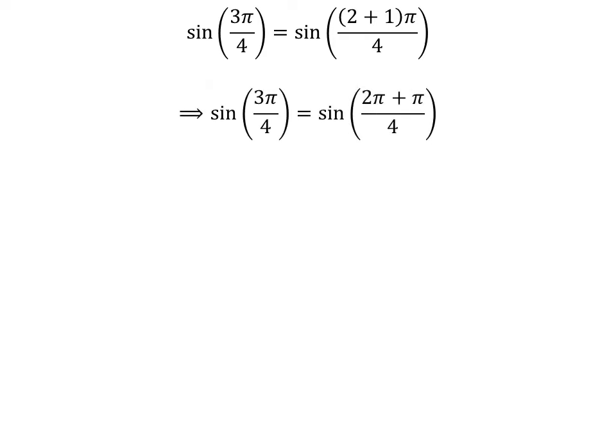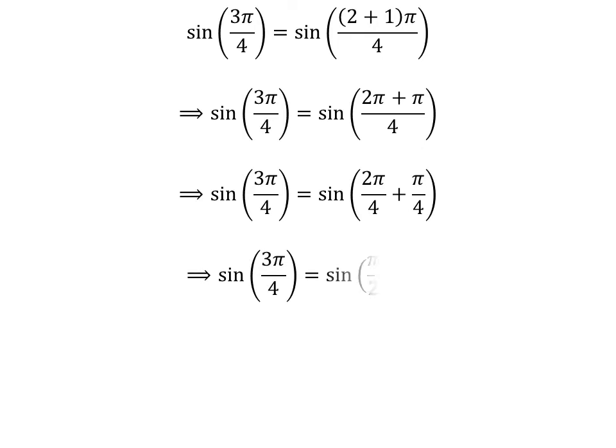Expanding the numerator, we get sine of 3 times pi upon 4 is equal to sine of 2 times pi plus pi upon 4. The fraction 3 times pi upon 4 can be expressed as the sum of two fractions, 2 times pi upon 4 and pi upon 4. Cancelling out the common factor in the numerator and the denominator gives us sine of 3 times pi upon 4 is equal to sine of pi upon 2 plus pi upon 4.